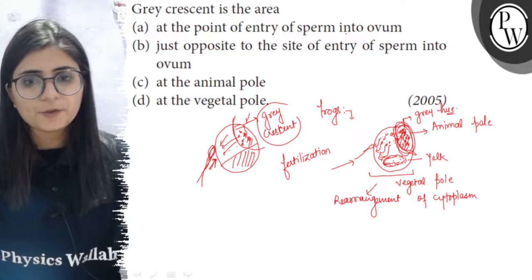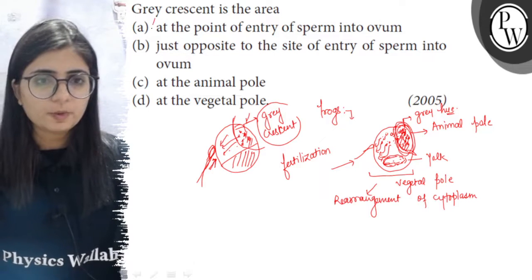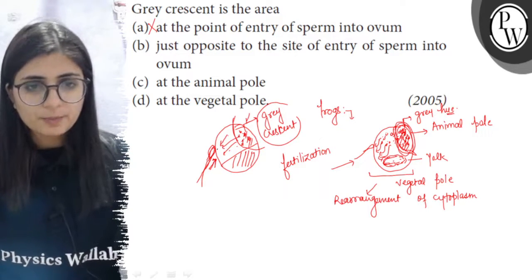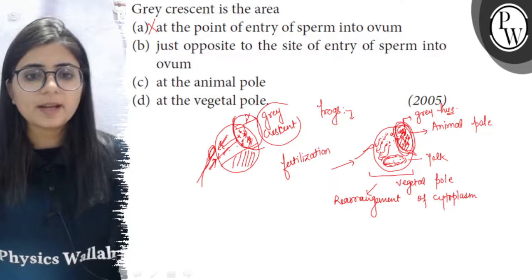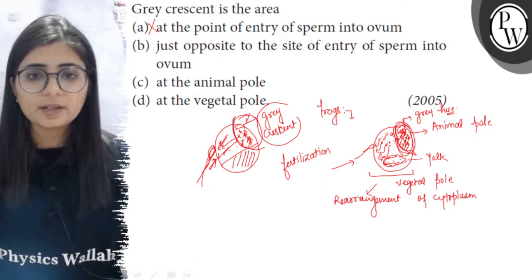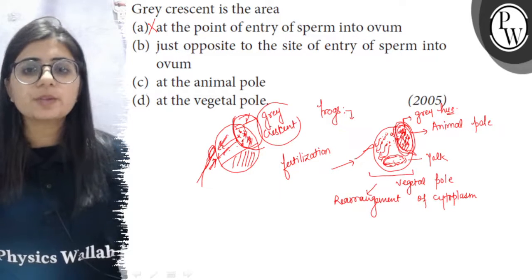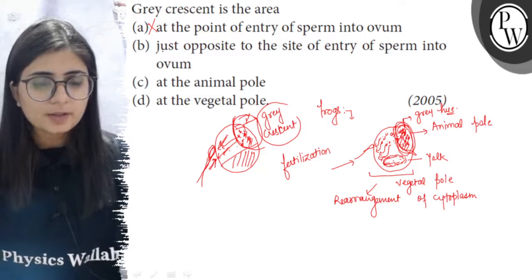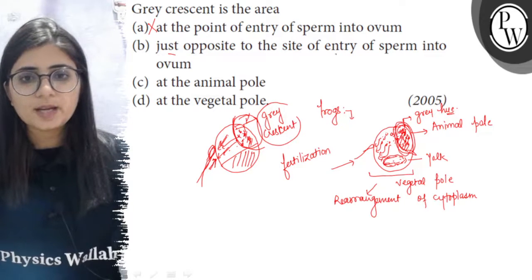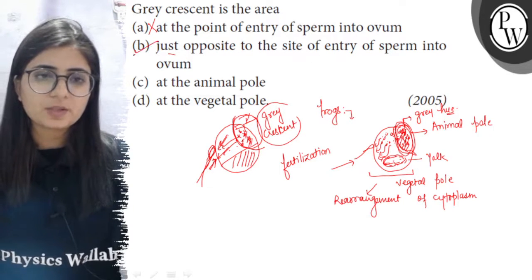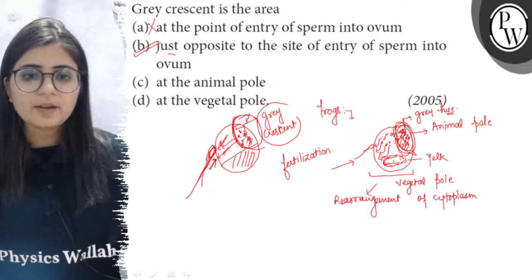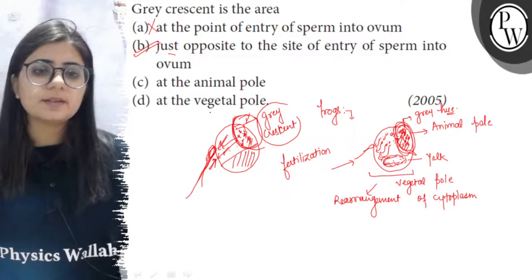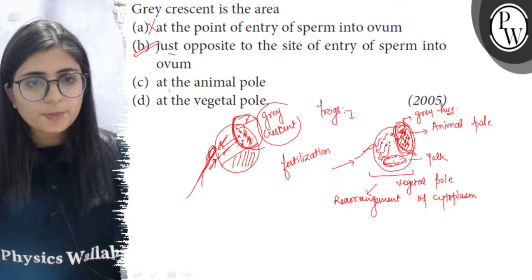Option A — gray crescent is at the point of entry of sperm into ovum — is not true, because at the point of entry the cytoplasm moves but the melanin stays at the opposite side. So the gray crescent is located opposite to the site of entry of sperm. Option B — just opposite to the site of entry of sperm into the ovum — is true.